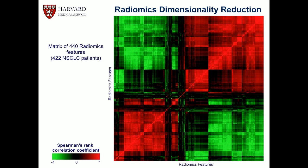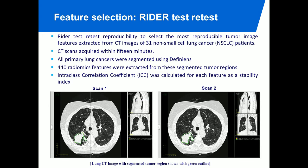One thing that is very good about imaging is that we can do test-retest. The writer test-retest dataset from Larry Schwartz at Columbia was made publicly available. They took 31 patients, put them on a CT scanner, they got off, had a coffee break, then got another scan 15 minutes later. We then segment both, do feature extraction for both, and see how similar they are. By doing so, we can identify unstable features that will very likely not be informative in future scans.